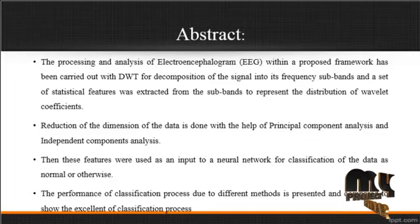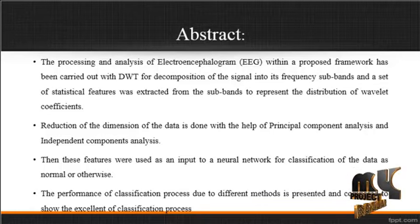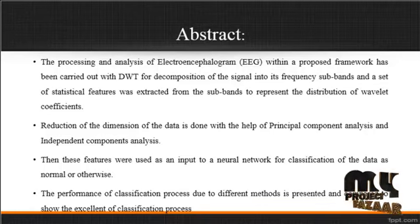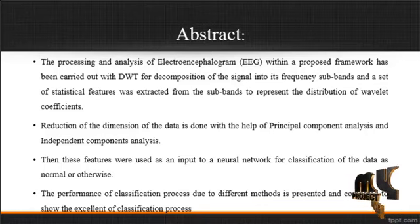We are going to discuss about the abstract for this process. The processing and analysis of EEG within the proposed framework has been carried out with DWT for the decomposition of the signal into frequency subbands. Statistical features are extracted from the subbands to represent the distributions of the wavelet coefficients. Dimensionality reduction is done with principal component analysis (PCA) and independent component analysis (ICA), which optimizes the features present in the signals.